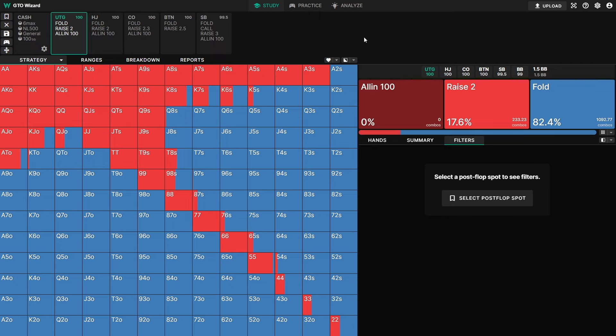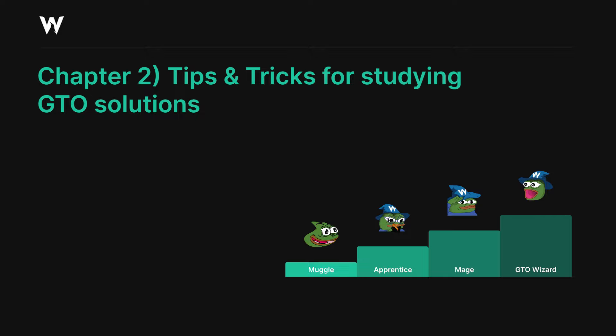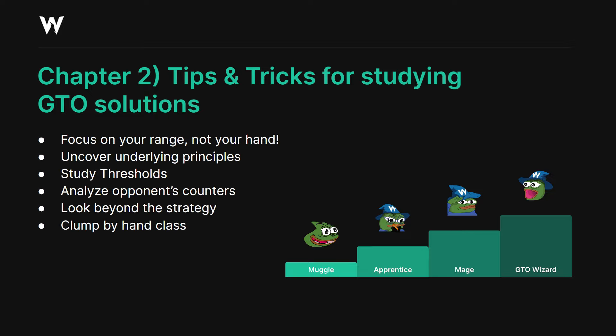That's mostly it for the solution browser. Now that you understand how to use it, let's move on to some tips. Now that you've learned all the features, I'm going to give you some tips and tricks for studying GTO solutions more effectively. If you've seen my efficient studying video, you'll know that I promote a big-picture approach. A lot of people go into solutions trying to memorize things and get overwhelmed by all the possibilities — you shouldn't be trying to memorize arbitrary frequencies; you should be looking for the bigger picture.